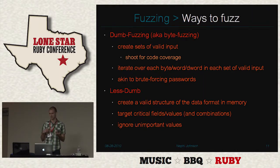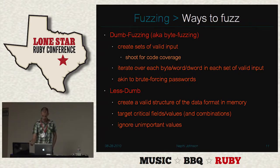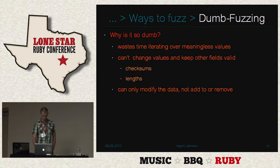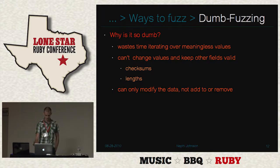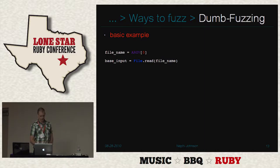A different, less dumb way means creating a model of the data format in memory and then iterating over the fields themselves. In this way, if there are checksums in the file or network protocol, those won't get thrown out because those actions will still take place and be calculated for the right values.